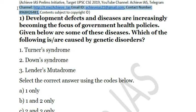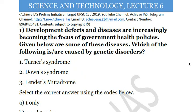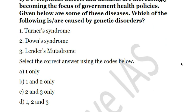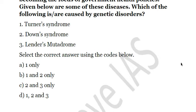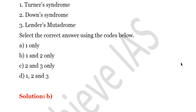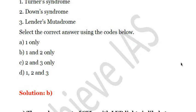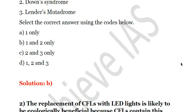The complete explanation of what Turner's Syndrome and Down's Syndrome are is available in our explanation PDFs, which are available only to our subscribers. If you want to subscribe, you can contact us. There will be a minimum cost for this subscription, kept as low as possible for your affordability as well as for our motivation. The answer to this question is B. Let's move on to the second question.